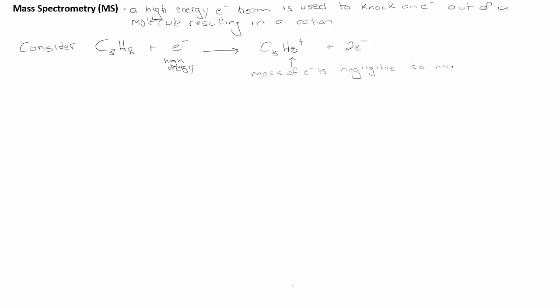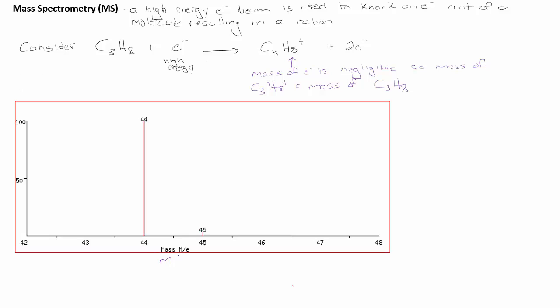Remember, the mass of an electron is essentially zero, so when an electron is removed from C3H8, the mass of the molecule itself doesn't change when it becomes an ion. So this is why it's important to note that the mass spectrometer detects positively charged cations.